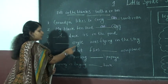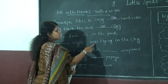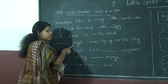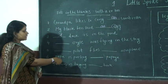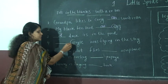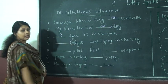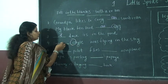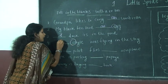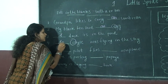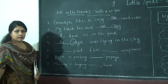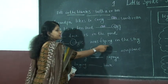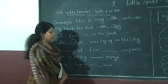Next sentence: Dash eagle was flying in the sky. The word is eagle. First letter E. E is a vowel, so AN is the right answer. AN eagle was flying in the sky.